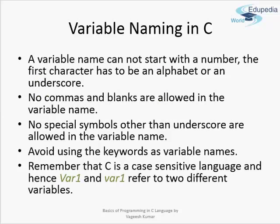A few more rules on variable names. A variable name cannot start with a number — it should start with an alphabet or an underscore. No commas or blanks are allowed in a variable name. The only special character allowed is the underscore; you cannot use spaces, commas, tabs, or anything else. You should also avoid using C predefined keywords as variable names. Remember that C is a case-sensitive language, so a variable with a capital letter and one with the same name in lowercase refer to two different variables. For example, Var1 with capital V and var1 with small v are two different variables.